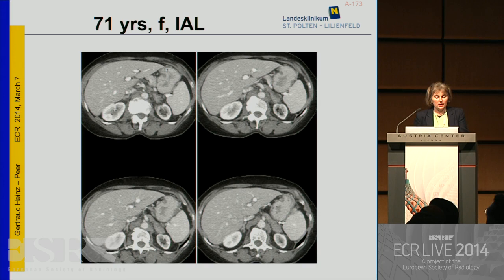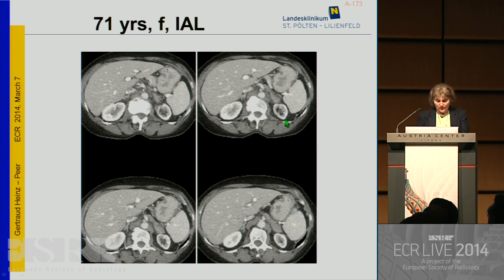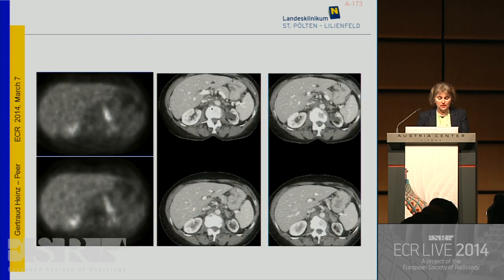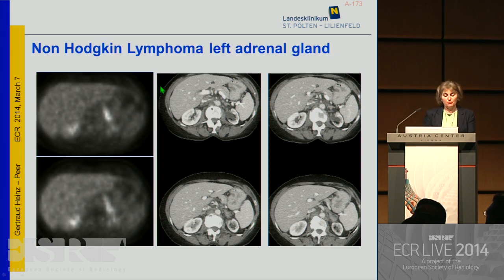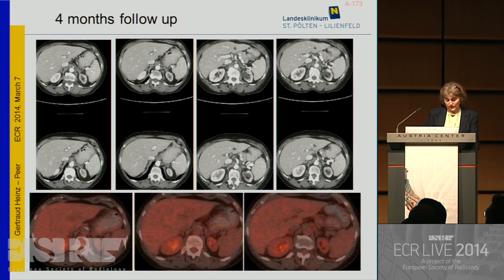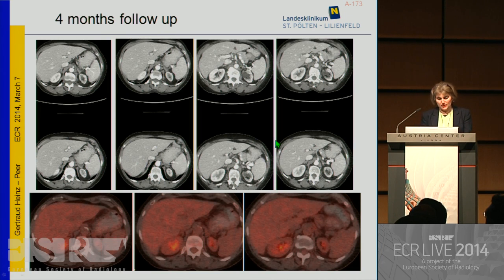In another patient with an incidentaloma — a diagnosis by chance — a small left adrenal mass was found and PET-CT showed a very markedly increased uptake of tracer. This proved to be a malignant disease: a primary non-Hodgkin lymphoma of the left adrenal gland. The patient underwent chemotherapy, and at four-month follow-up, the lesion had completely disappeared.